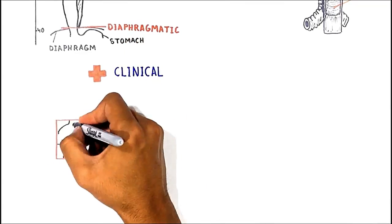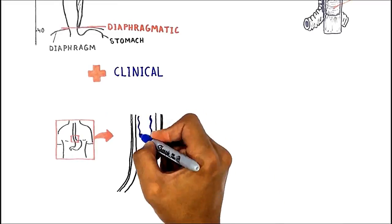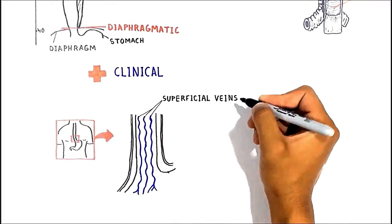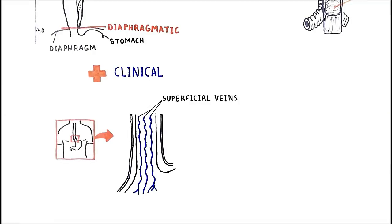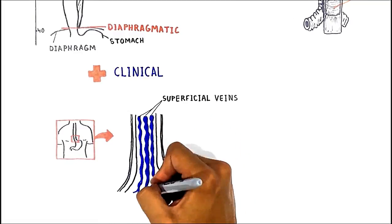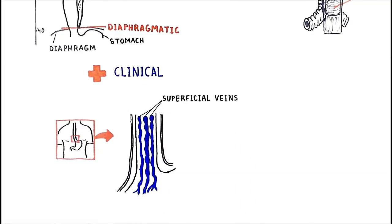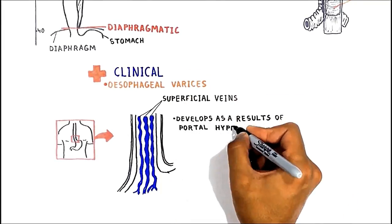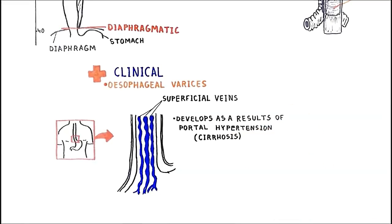The lower one-third of the esophagus is drained into superficial veins lining the esophageal mucosa, which drain into the left gastric vein, which in turn drains directly into the portal vein. In clinical practice, these superficial veins can become distended up to 1–2 cm in diameter, causing esophageal varices as a result of portal hypertension, commonly due to cirrhosis of the liver. Dilated veins of the esophagus can rupture, causing bleeding. Esophageal varices are diagnosed with endoscopy.